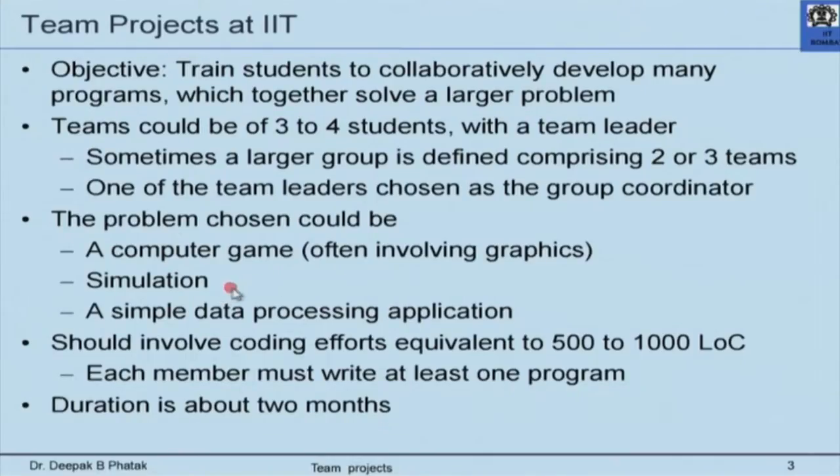The problem could be a simulation or a simple data processing application such as building a library system, hospital system, or class attendance system. We believe that for a team the effort involved should be equivalent to 500 to 1000 lines of code, and if there are multiple teams the effort should involve something larger. It is not uncommon at IIT and other institutions for some groups to have written 5000 to 7000 lines of good quality, well-tested and documented code. First-year students can emerge towards the end of the semester almost as top-class professional programmers.